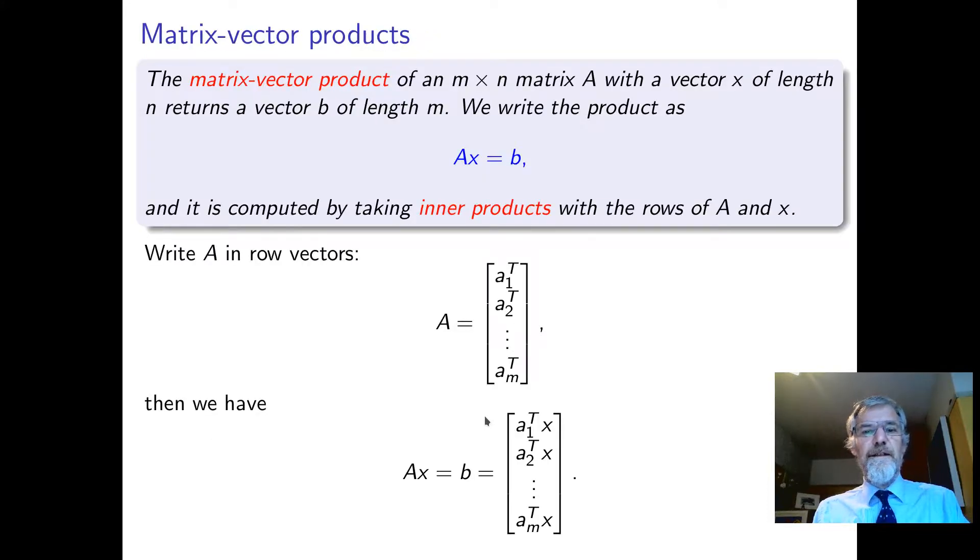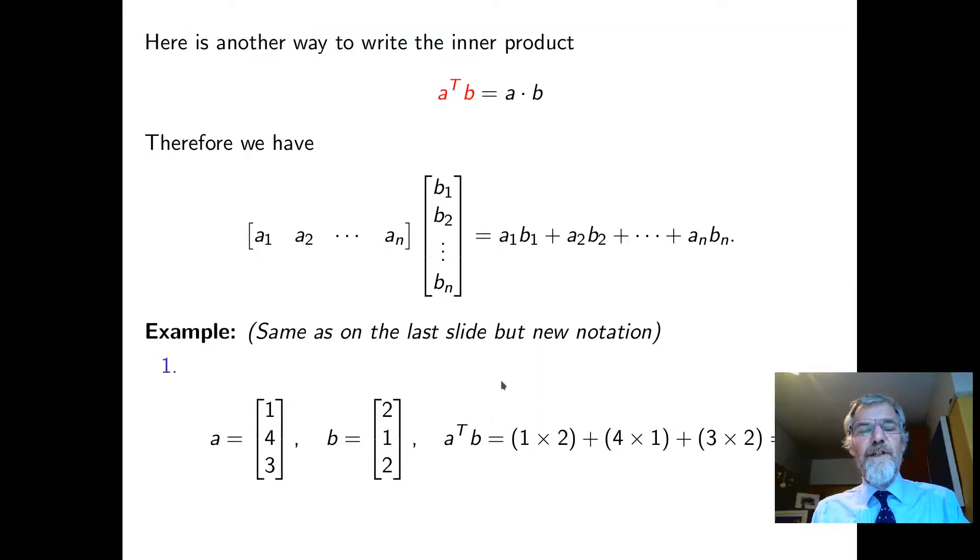We can also write that as a transpose times b. In other words, if we write this row vector and this column vector, then in this notation we can multiply a row by a column. What we do is a_1 times b_1 plus a_2 b_2. We just multiply the corresponding things and add them up. This is the beginning of understanding how we multiply matrices.